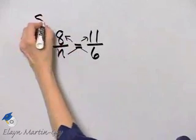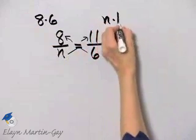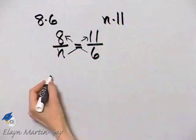This is 8 times 6. And what is this cross product? n times 11. So let's set them equal to each other.